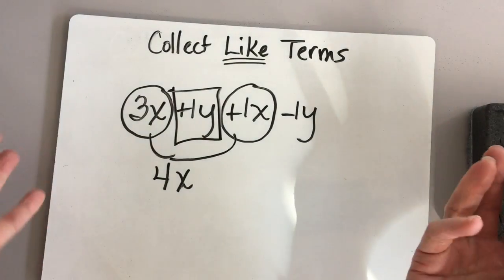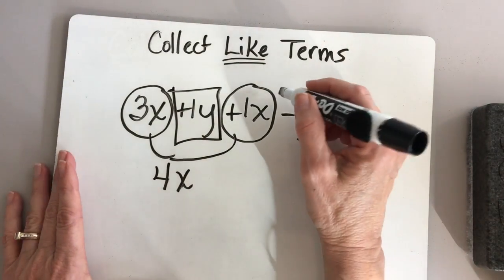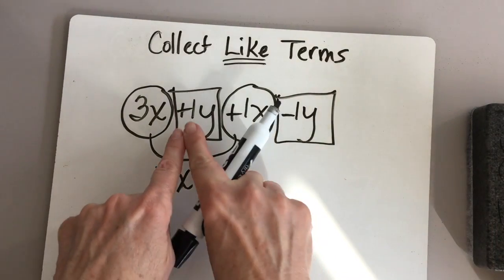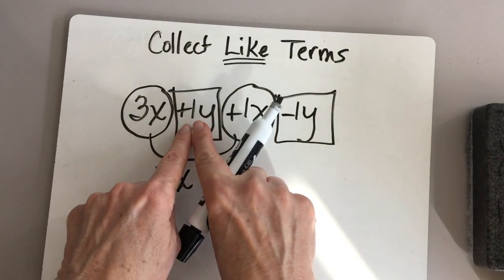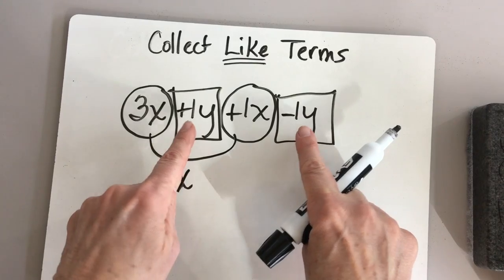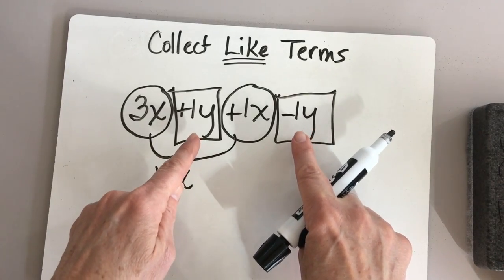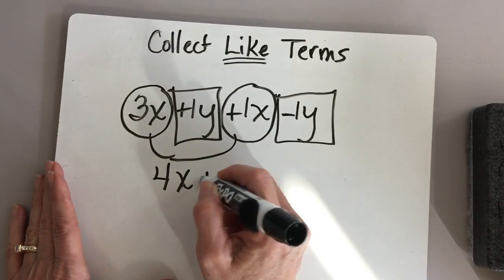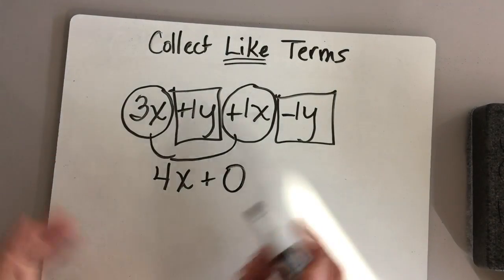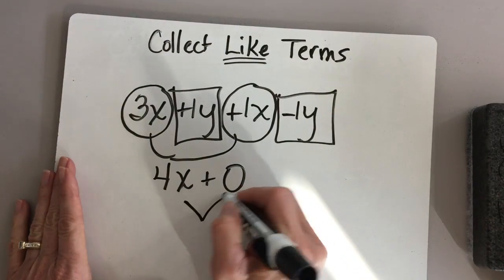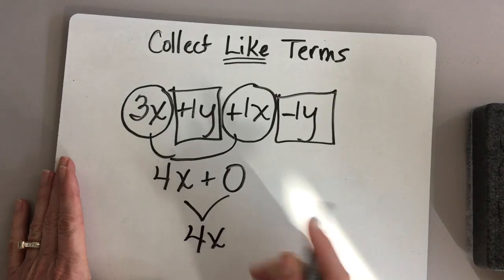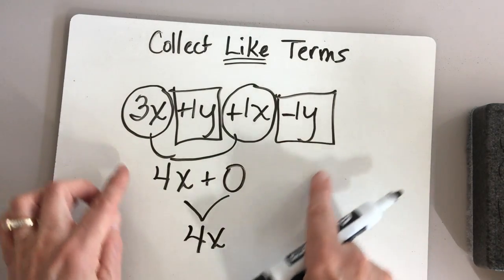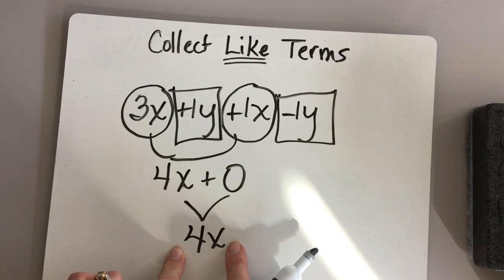Now we're going to combine the y's. We have a plus 1y and then a minus 1y. What does that equal? That equals 0. 0 times y would be 0, so plus 0. It simplifies to just 4x. This entire expression simplified to 4x.